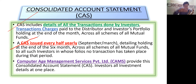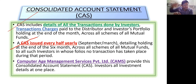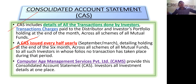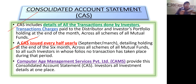First half of the financial year ends on 30th September, and the second half ends on 31st March. CAS details holding at the end of six months for investors in whose folios no transactions took place.